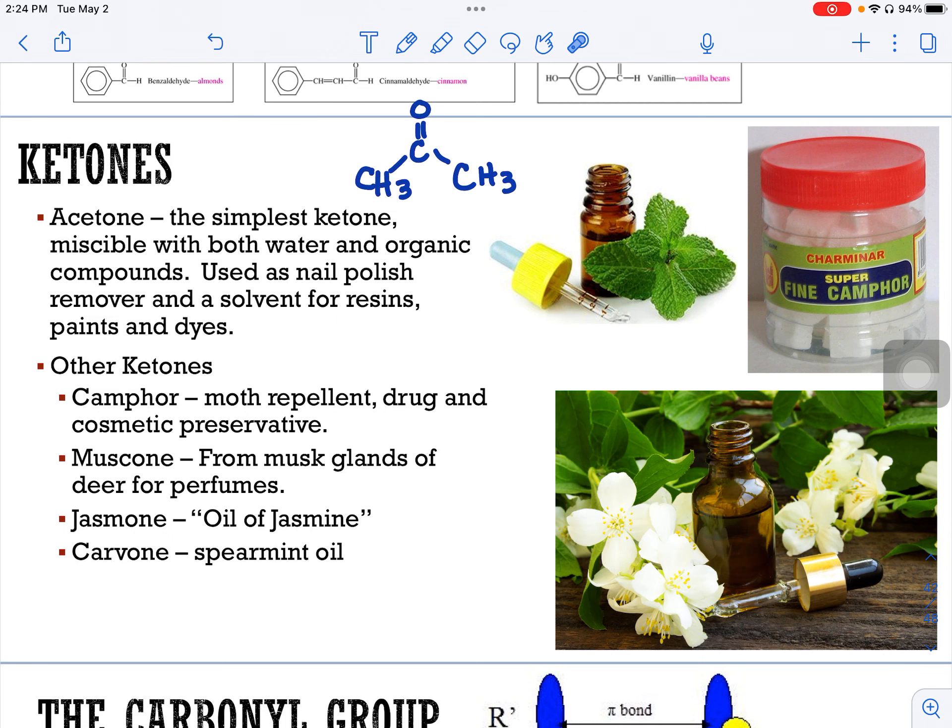Other ketones include camphor, has a super specific smell that you may recognize. Muscone, that's when someone's wearing musk cologne. That's from the musk glands of the deer for perfumes. And jasmine, or the oil of jasmine. And then finally, carvone, which is spearmint oil right here. So you can see here that ketones also have certain smells. Some people describe the smells of ketones as more spicy or kind of like Vicks vapor rub. They all kind of have a similar smell.